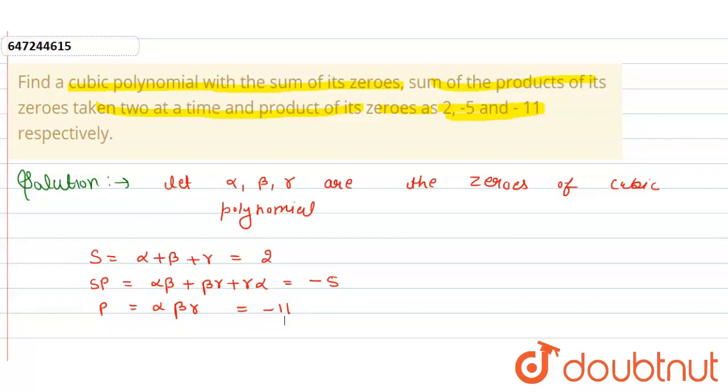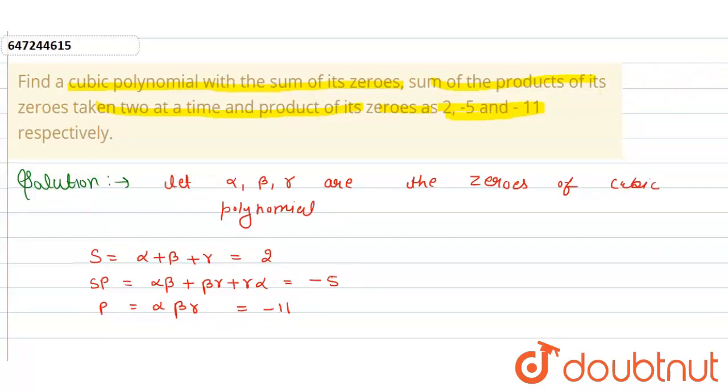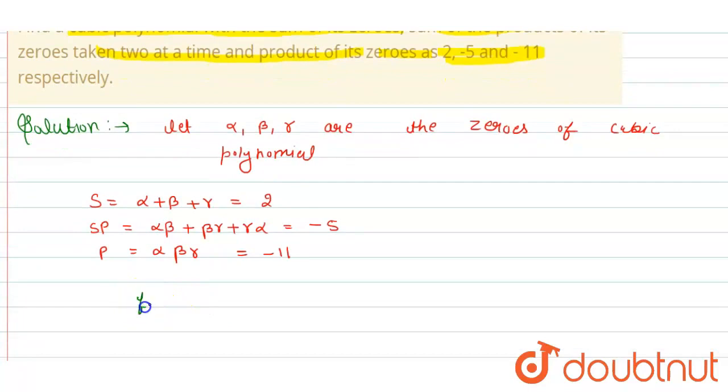If I write a cubic polynomial, it is defined this way. f(x), which is the cubic polynomial, equals x³ minus sum into x². That is alpha plus beta plus gamma of x². Plus SP, sum and product two at a time, into x. And minus—sorry, minus the product.